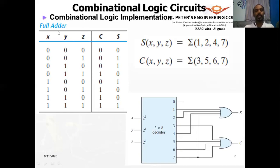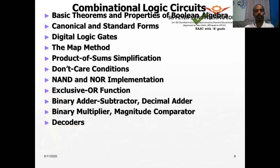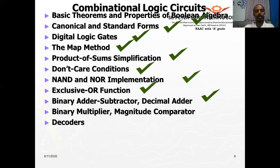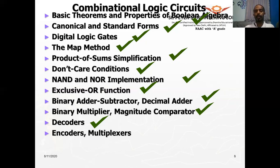You can try implementing other functions using a decoder — for example, a full subtractor or any other Boolean function discussed so far. In the next session we will look into encoders and multiplexers. An encoder does the reverse of a decoder: while a decoder takes N inputs and produces M=2^N outputs, an encoder takes M inputs and produces N outputs.